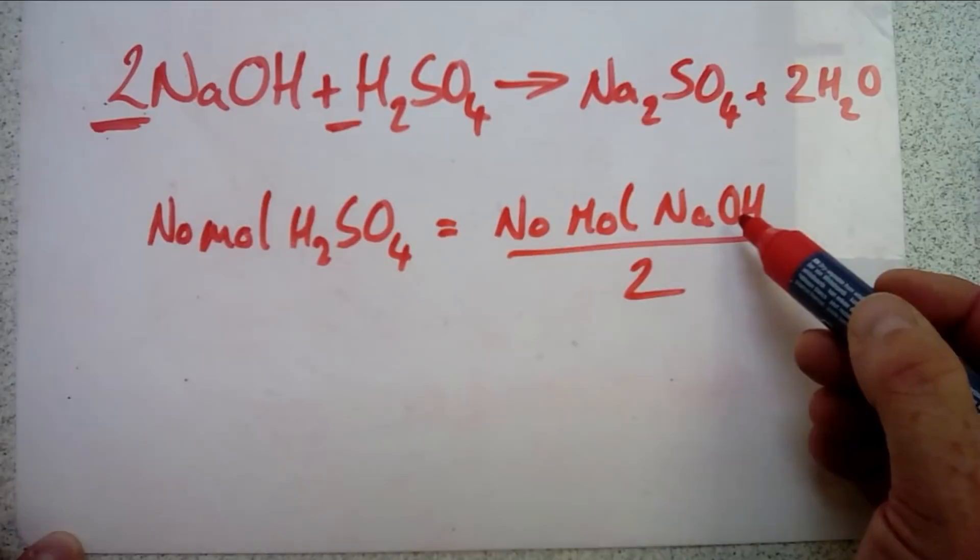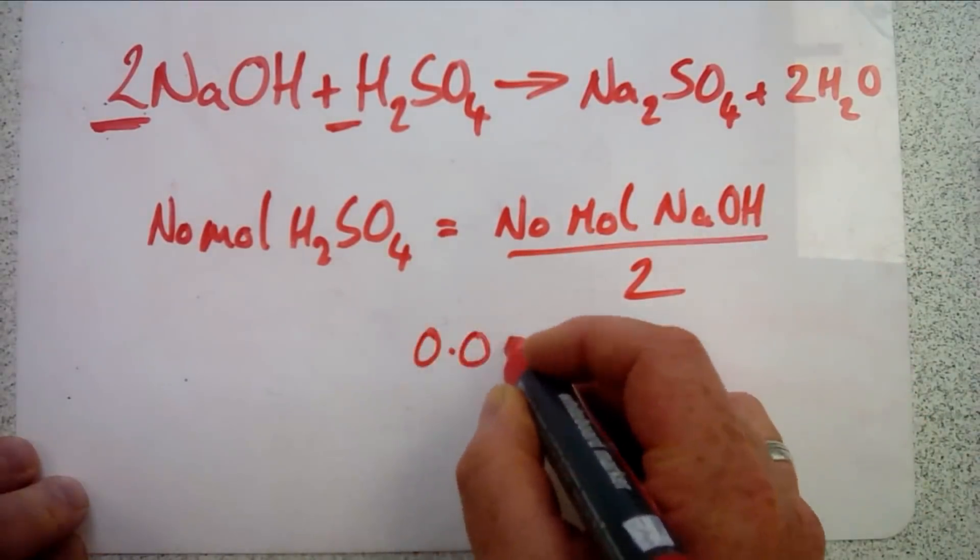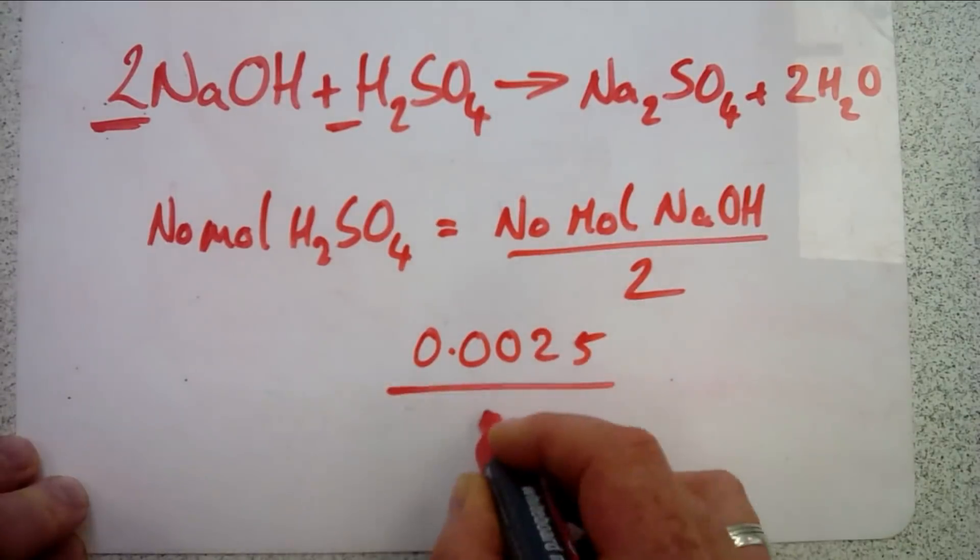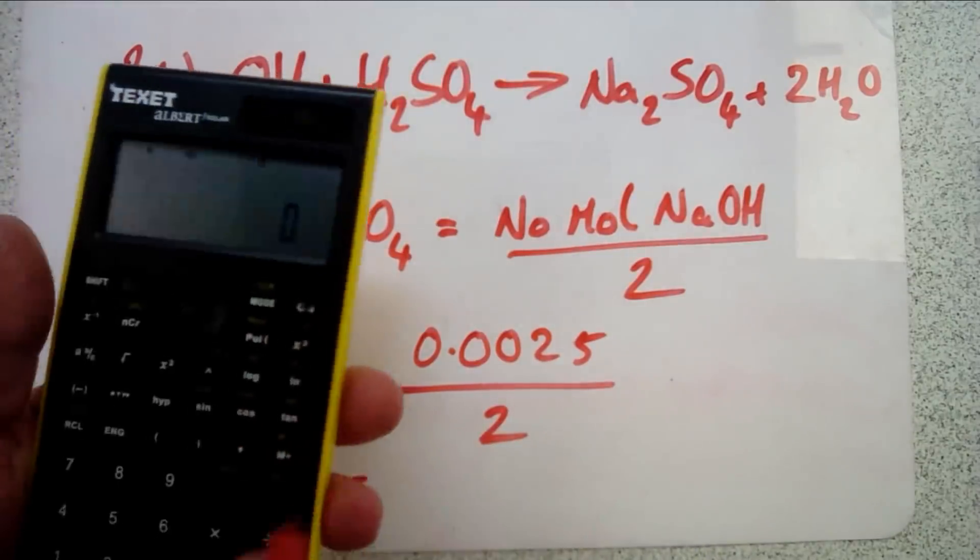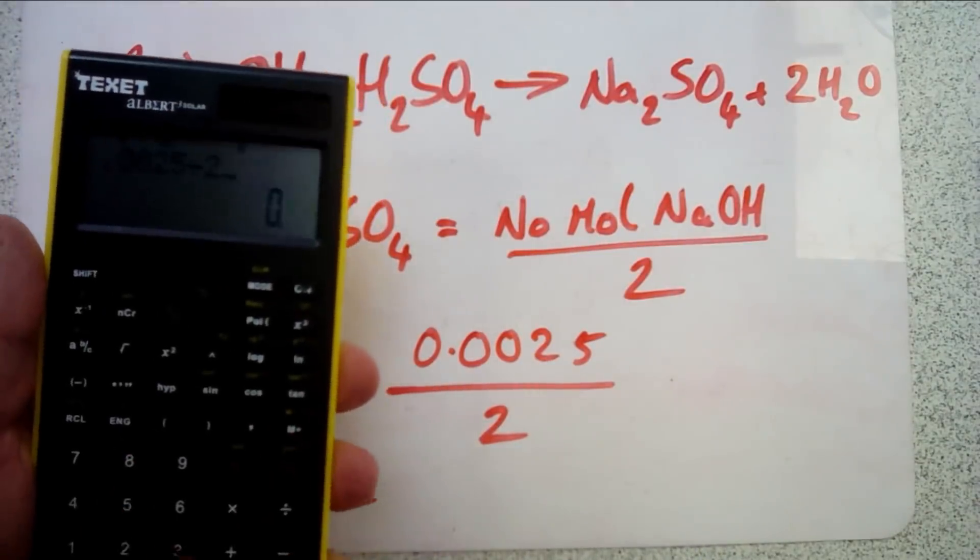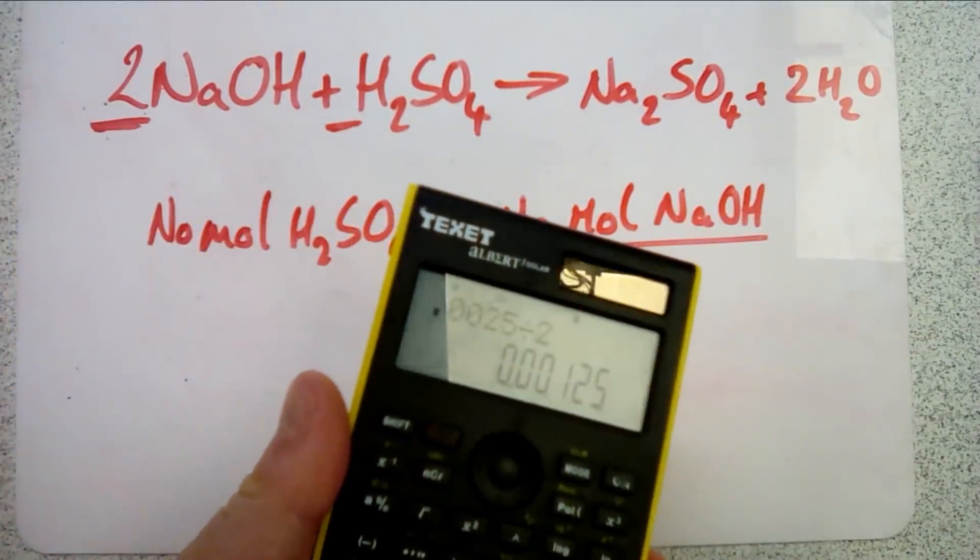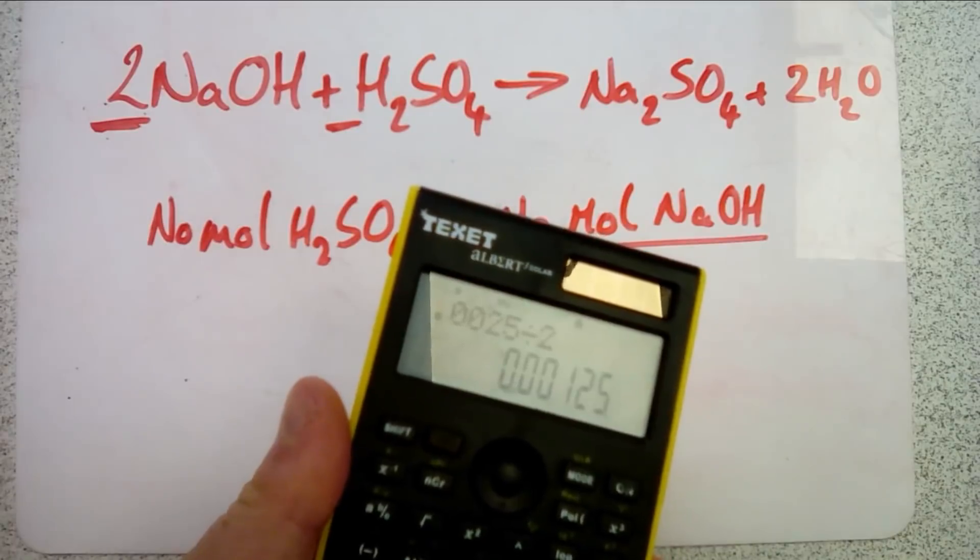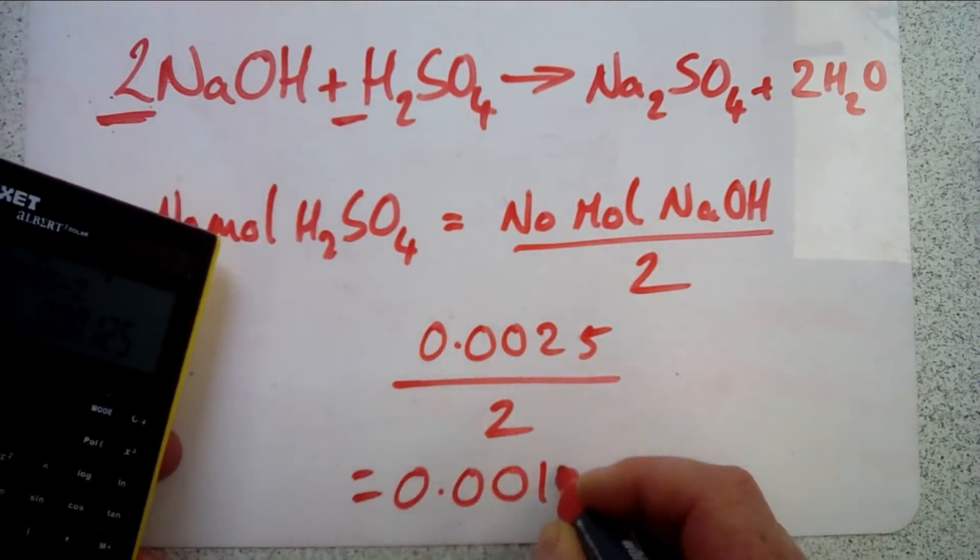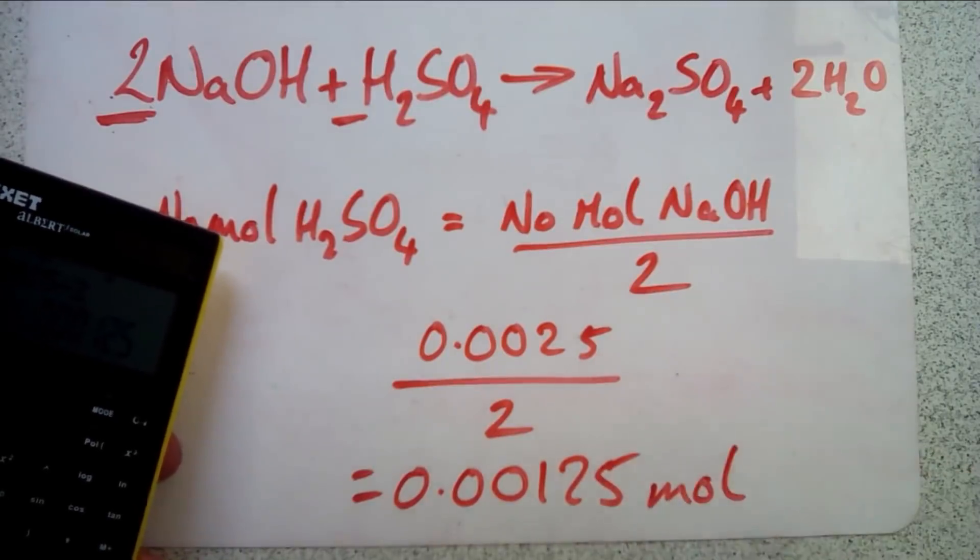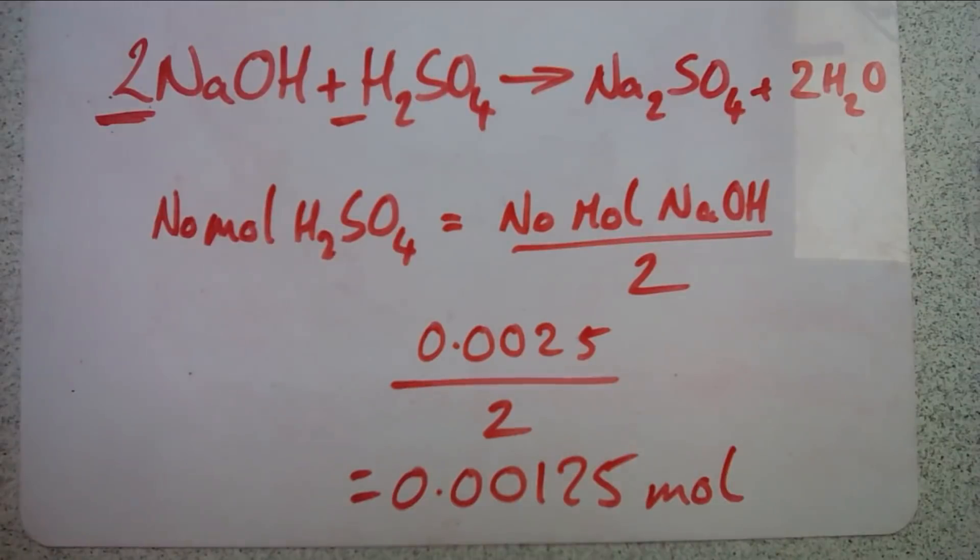This number here we had from step one, we worked out to be 0.0025. We divide that by two, which gives us 0.0025 divided by two equals 0.00125. So we needed 0.00125 moles of sulfuric acid.